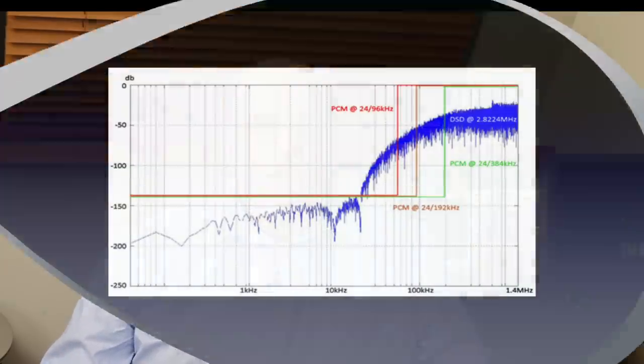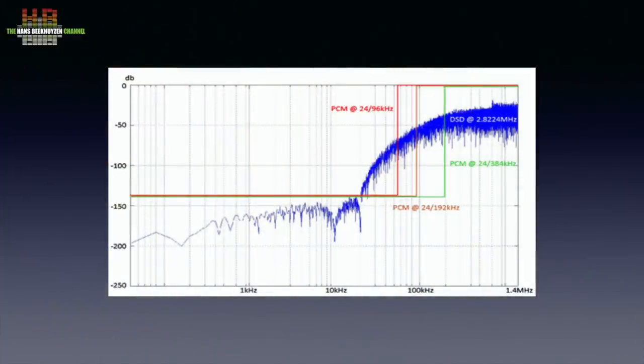DSD is technically a special form of PCM that uses a very high sampling rate — mostly 64 times that of a CD — and only 1-bit resolution. Since 1-bit resolution only gives 6 dB of signal to noise, a noise shaper is used to move that noise from within the audio band to a spectrum outside it.